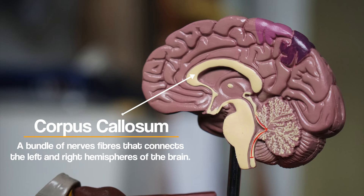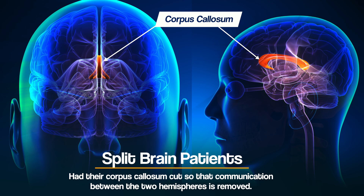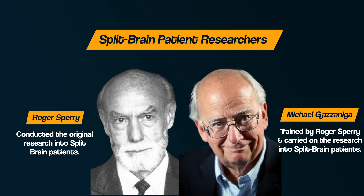We can develop our understanding of hemispheric lateralisation further by exploring split-brain research. In your brain, you have a bundle of nerve fibres called a corpus callosum, which connects the two hemispheres. Split-brain patients are people who've had their corpus callosum cut so that communication between the two hemispheres is removed. This was done as a last resort to treat the severe epilepsy they were suffering. For neuropsychologists Roger Sperry and Michael Gazzaniga, split-brain patients provided the opportunity to explore how lateralised the brain actually is.